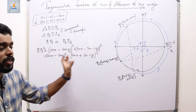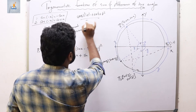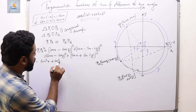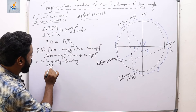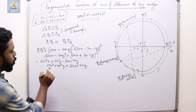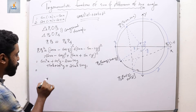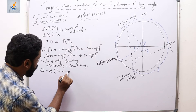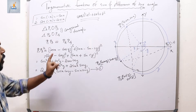Expanding using (a−b)² = a² − 2ab + b², we get cos²x + cos²y − 2cos x·cos y + sin²x + sin²y + 2sin x·sin y. Since cos²x + sin²x = 1 and cos²y + sin²y = 1, the sum simplifies to 2 − 2(cos x·cos y − sin x·sin y). This is equation number 1.